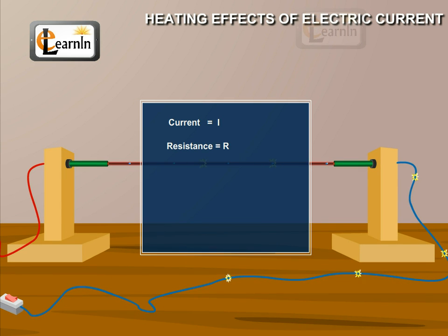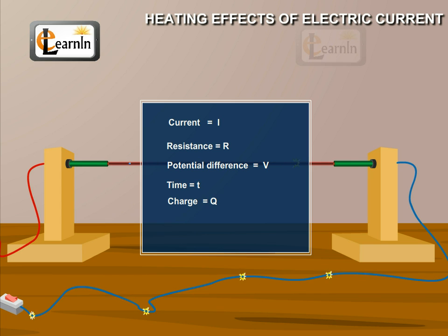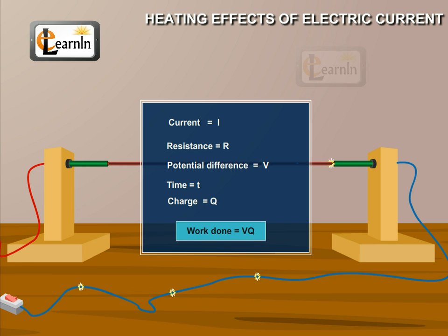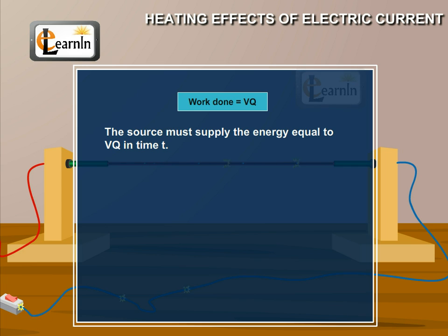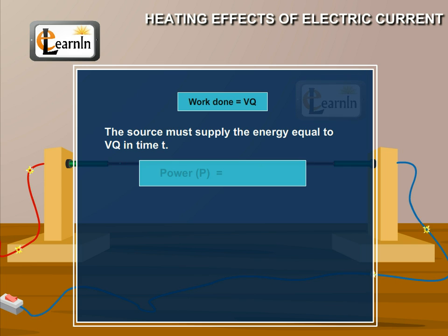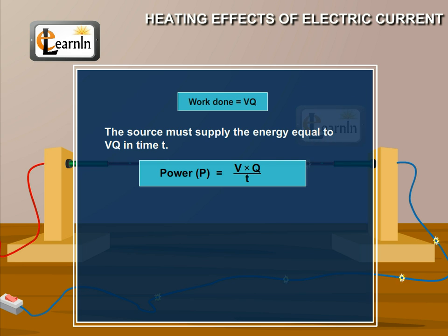Consider a current I flowing through a resistor of resistance R, with the potential difference across it V. Let t be the time during which the charge Q flows across. The work done in moving the charge Q through a potential difference V is VQ. Therefore, the source must supply energy equal to VQ in time t. Hence, the power input to the circuit by the source is P = V × Q/t = VI.